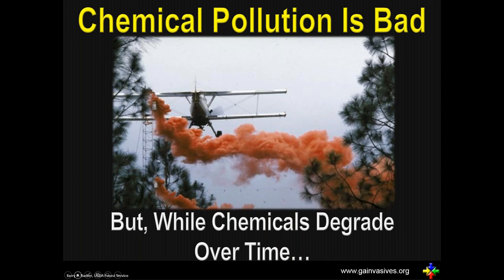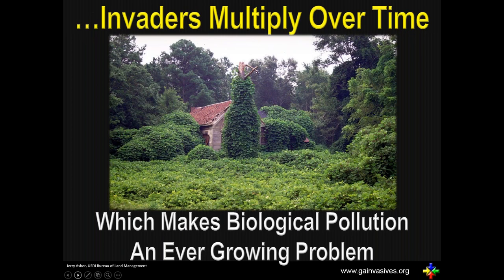We know that chemical pollution is bad, but we kind of got lucky with that one. We found out that chemicals would break down over time so their effects were not as bad. We were able to bring back some of the species we were afraid we were going to lose, such as the bald eagle. Unfortunately, while chemicals degrade over time, invasive species do not. They're living organisms, so their priority is to continue living, reproduce, and grow. That makes this a biological problem, different than the chemical problem.